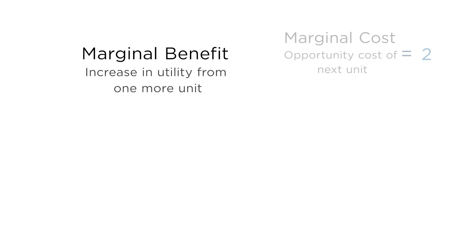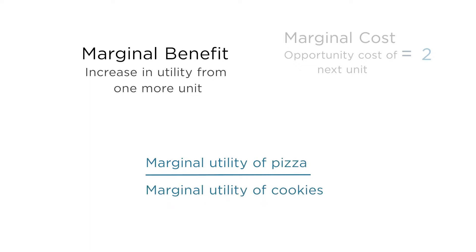Similarly, the marginal benefit of another slice of pizza can be expressed as the ratio of the marginal utility of pizza to the marginal utility of cookies. That is, the benefit of having another slice of pizza is how happy that slice makes you relative to the cookies you could have had instead. Why isn't the benefit just the marginal utility of a slice of pizza? Because of opportunity cost — if you're going to have that slice of pizza, you have to have fewer cookies, so you have to consider how happy it makes you relative to the cookies you're now skipping.